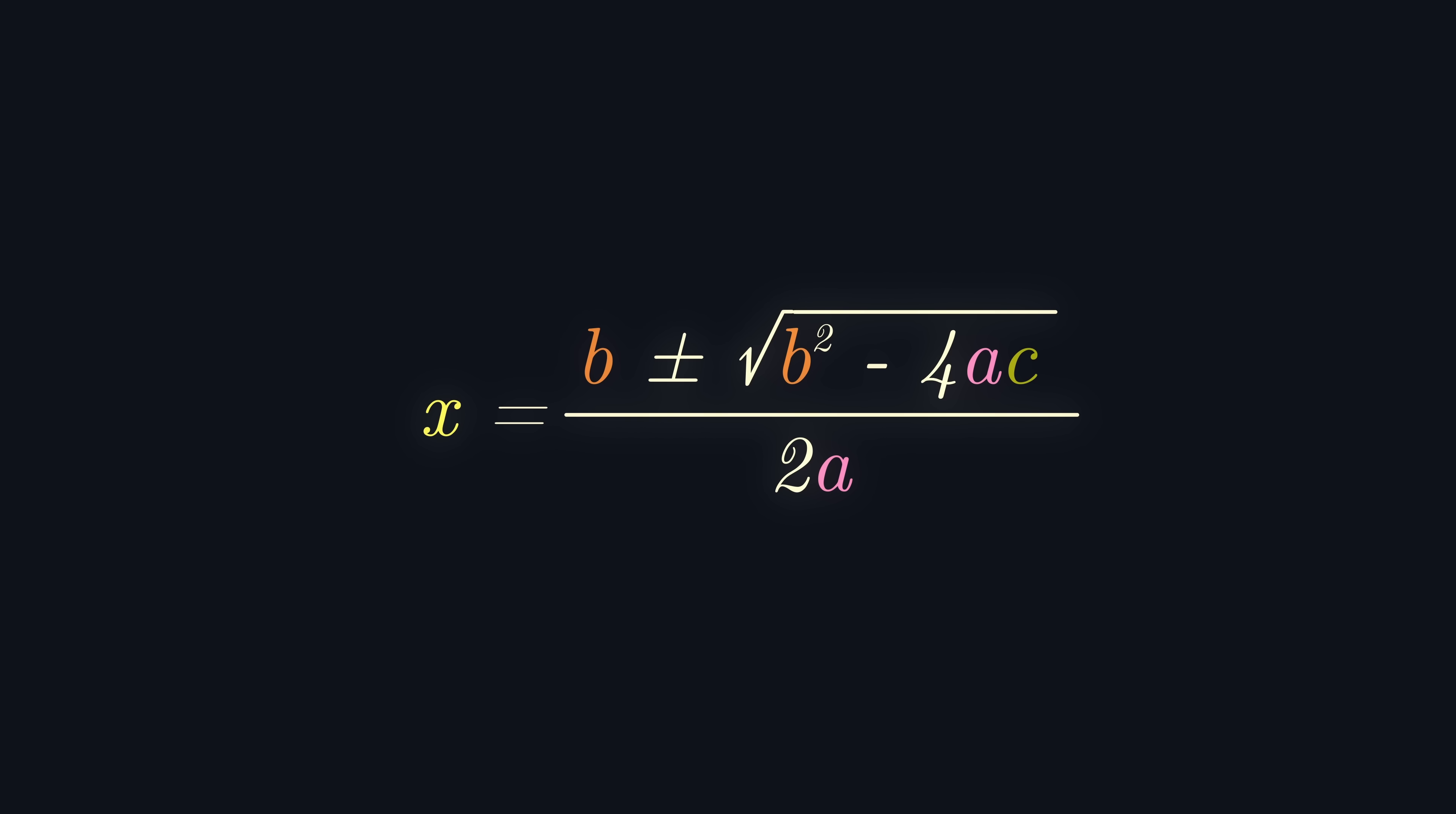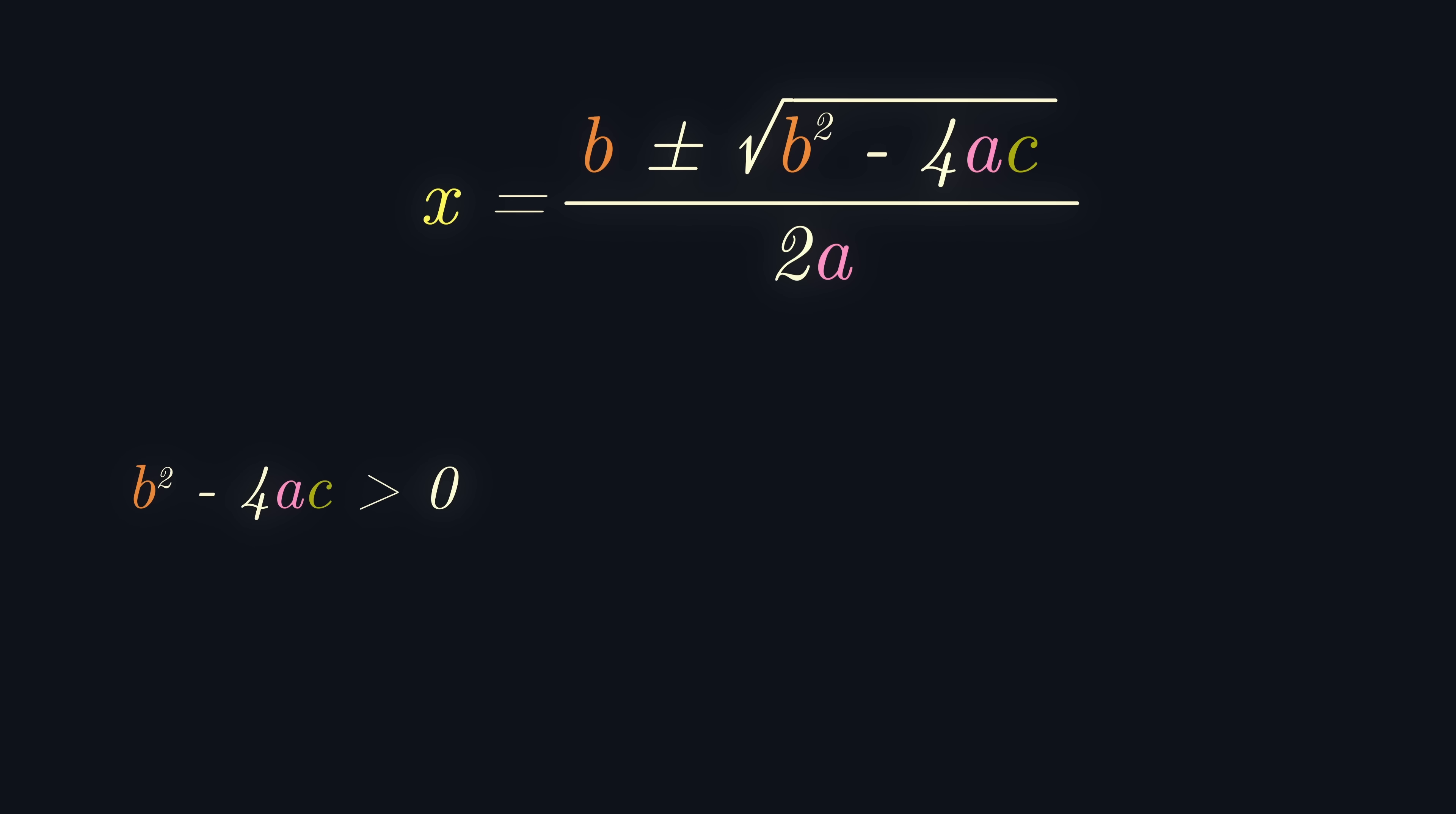The part of the formula under the square root, b squared minus 4ac, is known as the discriminant, and the sign tells us whether we have two real roots, one real root, or no real roots.